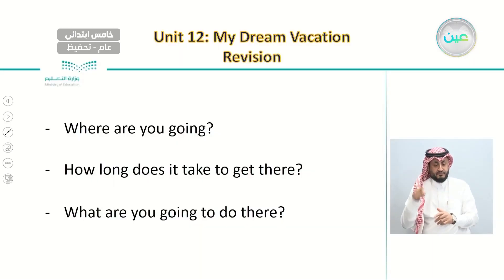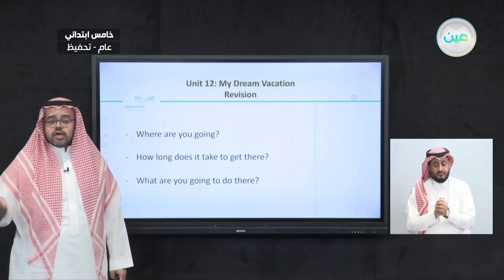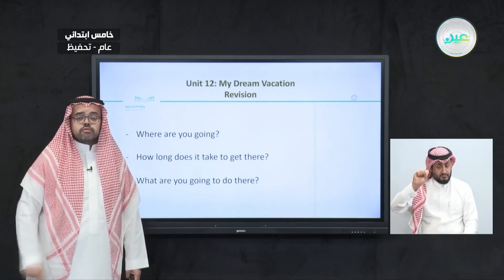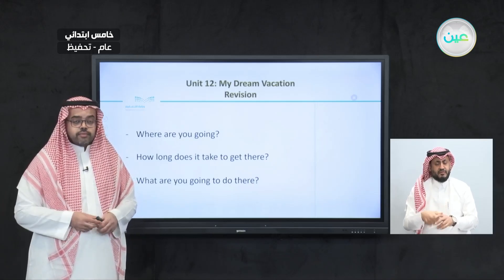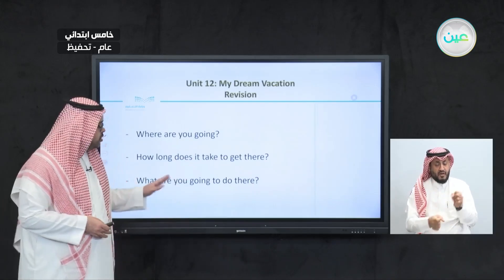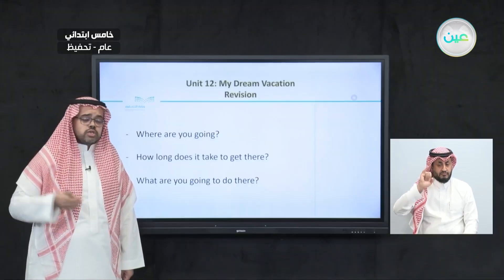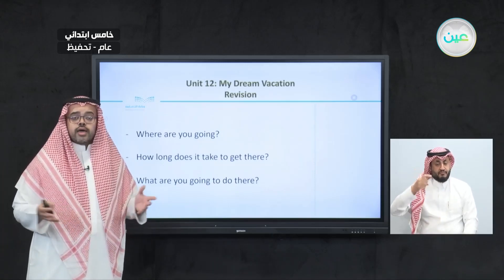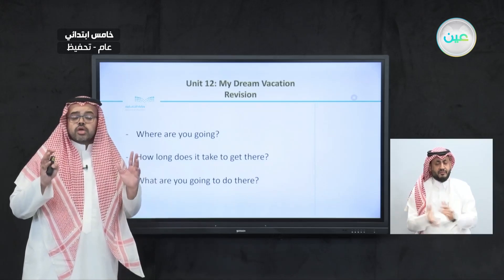The second question is: How long does it take to get there? — meaning how many hours does this flight take. The answer starts with: It takes about — for example, It takes about five hours, It takes about three hours. The third question is: What are you going to do there? Your partner should start their answer with: I am going — then name an activity. I'm going diving, I'm going swimming, I'm going sightseeing, and so on.